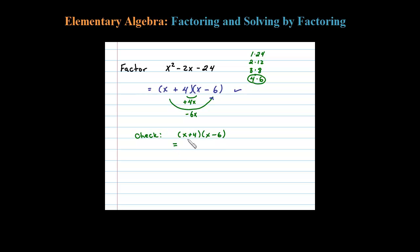If we multiply this out, we should get back to where we came from, the original. x times x is x squared, minus 6x plus 4x, and then minus 24. So you can see x squared minus 2x minus 24 is the original expression.